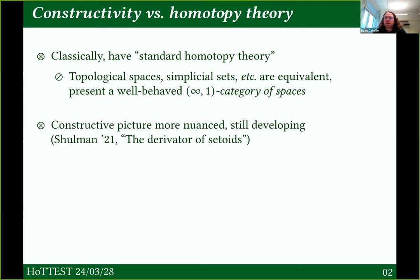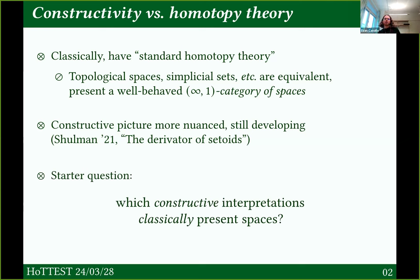The constructive picture is more complicated. As a community, we're still trying to figure this out. I'd like to point to an article that Mike wrote, 'The Derivator of Setoids,' which points to some strange questions that come up if you want to ask what is standard homotopy theory constructively. But we could start with the question: which of those constructive interpretations classically present spaces? If I look at them in classical mathematics, I can construct an equivalence to one of these standards, even if I don't know that equivalence is constructive.